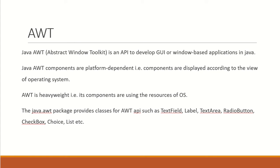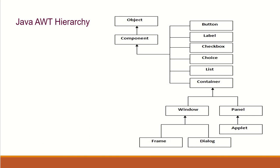The Java AWT package has classes which help you to create text fields, labels, text areas, radio buttons, check boxes, etc. Usually all these are part of what we call the visual display or the graphical user interface. So now let's see what is the Java AWT hierarchy.